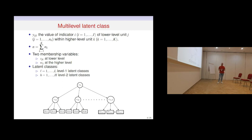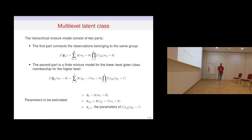We indicate with Y_{AJK} the value of indicator I of lower-level unit J within higher-level unit K. We consider two membership variables: F_{JK} for the lower level, with corresponding latent classes indicated by L, and W_K for the higher level, with corresponding latent classes indicated by H. These models are described by two equations: the first for the higher level connects observations belonging to the same group as a mixture with weights P(W_K = H), and the second is a mixture for the lower level, which weights the probability of X_{JK} given the membership for the higher level.